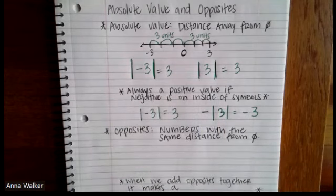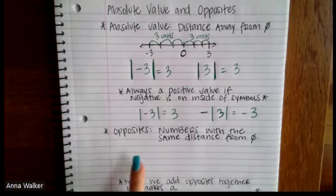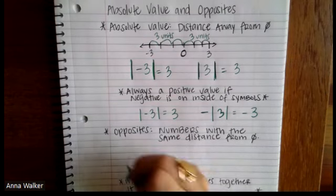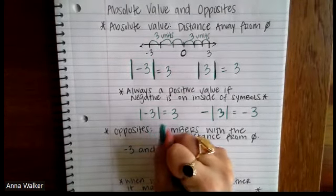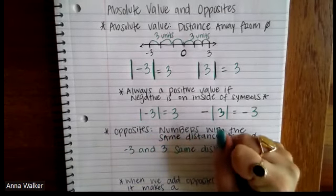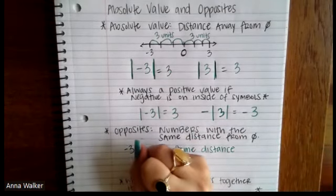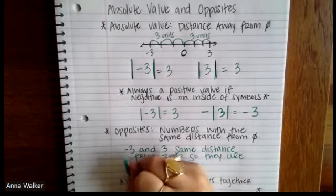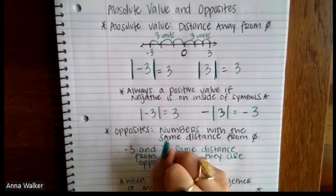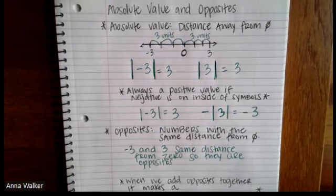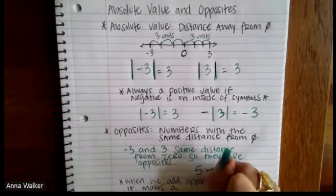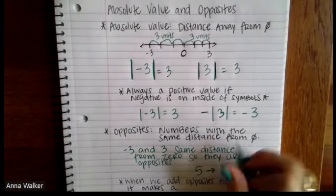The distance away from zero is what we call absolute value. In the same kind of track, there's something called an opposite. Opposites are numbers that have the same distance away from zero. We can look at the two examples we just did — three and negative three have the same distance away from zero, so they are opposites. Since these two numbers have the same distance away from zero, they would be classified as opposites. If we have a number like five, its opposite is going to be whatever number has the same distance away from zero, which is negative five.